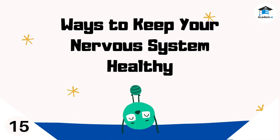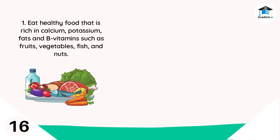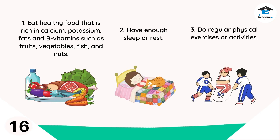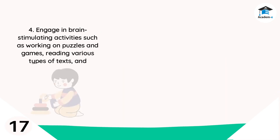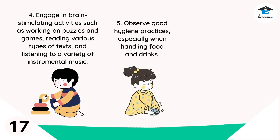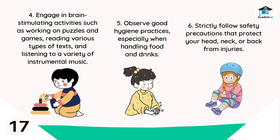When your nervous system is healthy, you can do a lot every day. Follow these ways to keep your nervous system healthy: one, eat healthy food rich in calcium, potassium, fats, and B vitamins such as fruits, vegetables, fish, and nuts; two, have enough sleep or rest; three, do regular physical exercises or activities; four, engage in brain-stimulating activities such as working on puzzles, games, reading various texts, and listening to instrumental music; five, observe good hygiene practices especially when handling food and drinks; six, strictly follow safety precautions that protect your head, neck, or back from injuries.